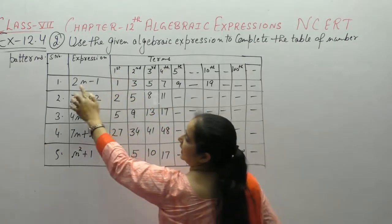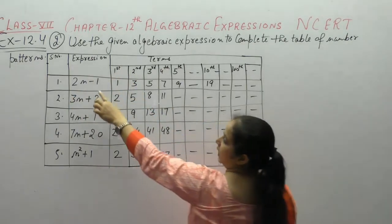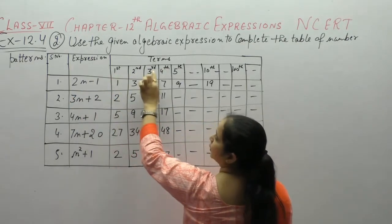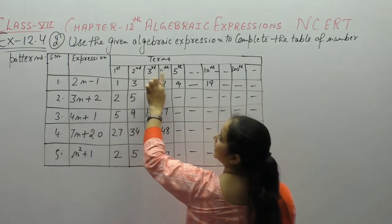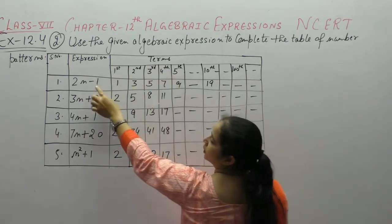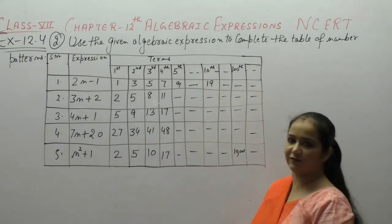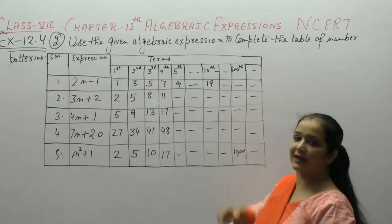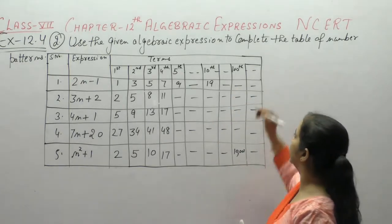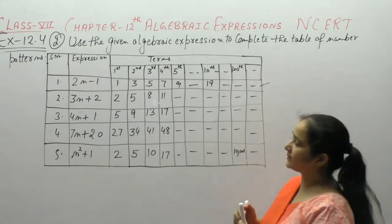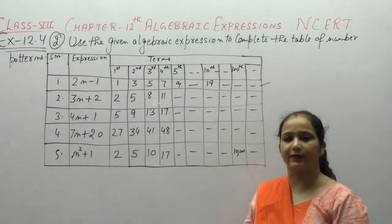1st means n की value हमने यहां पर put की 1, 2nd में n की value 2, 3rd में n की value 3, 4th में n की value 4, 5th में n की value 5 and so on. 10th term find की है. अब हमें इसकी 100th term बतानी है. तो n को हम क्या put करेंगे?